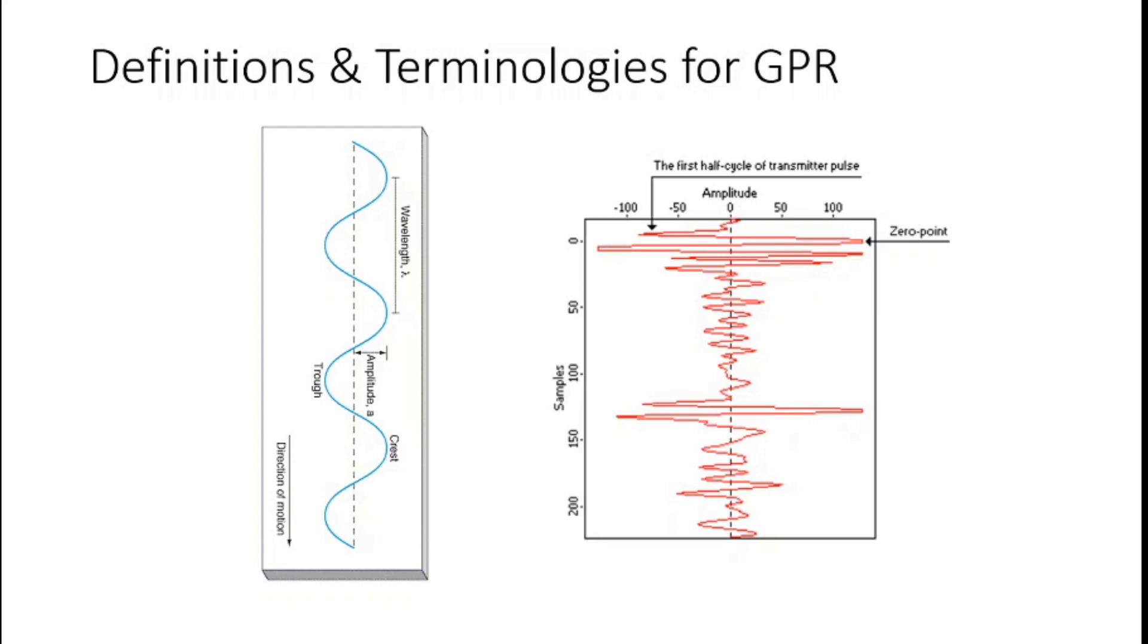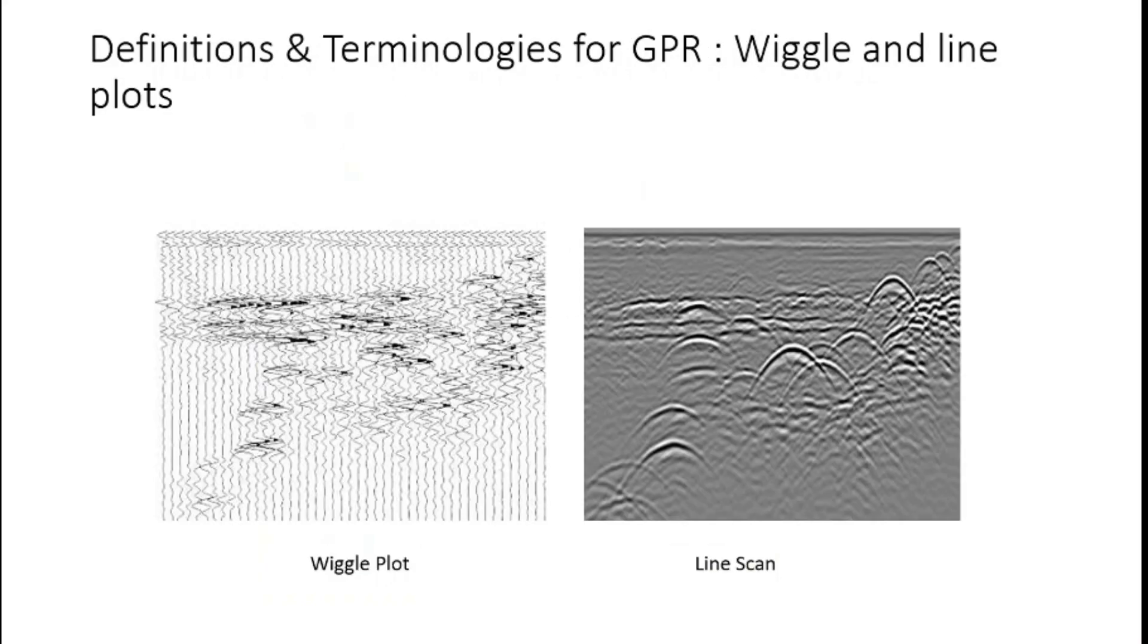And all these pulses then join together to make a 2D, and then those 2D sections will be joined together to make 3D images of subsurfaces. There is a term called zero point. The zero point is the point where the interaction between the wave and the subsurface begins. So we have to be very careful about it while making the topographic correction for the GPR processing.